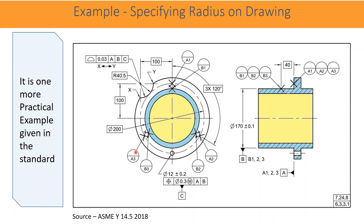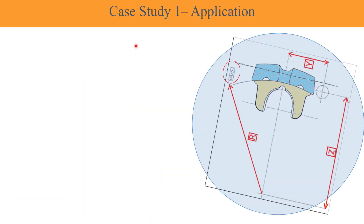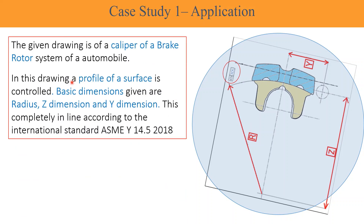Here is one more practical example given in the standard. The given drawing is of a caliper of a brake rotor system of an automobile. In this drawing, a profile of a surface is controlled, with basic dimensions given as radius, J dimension, and Y dimension. This is completely in line with the international standard ASME Y14.5 2018.